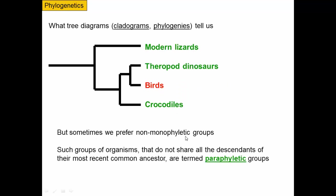Sometimes we prefer non-monophyletic groups. Here's an accurate phylogeny of modern lizards, theropod dinosaurs, birds, and crocodiles. When thinking about reptiles versus birds, lizards, dinosaurs, and crocodiles are all reptiles, but we don't usually think of birds as reptiles. If we defined a monophyletic group of reptiles, we'd go back to the reptile ancestor and include all its descendants — but that would include birds, which we clearly don't think of as reptiles. So sometimes we use a paraphyletic group: the ancestor and most but not all of its descendants — reptiles without birds.